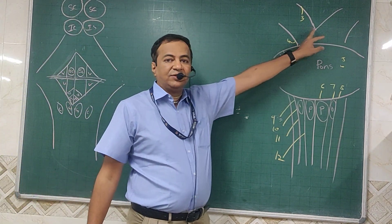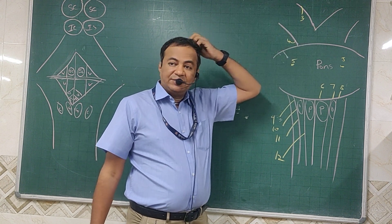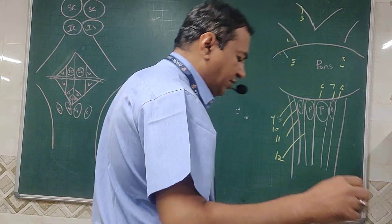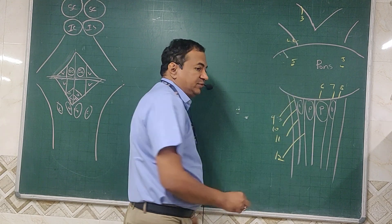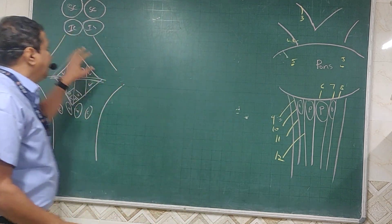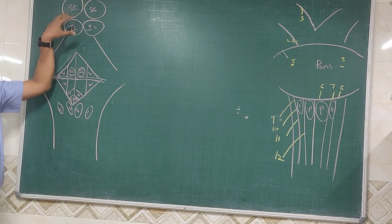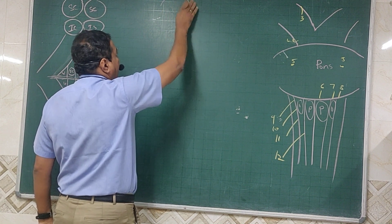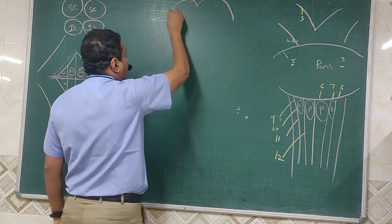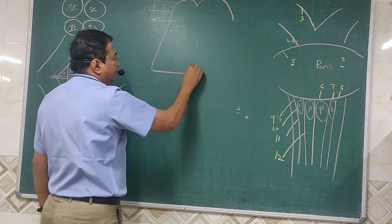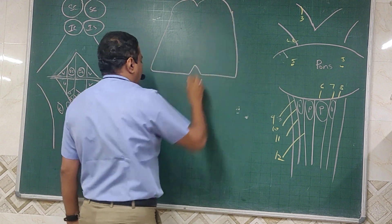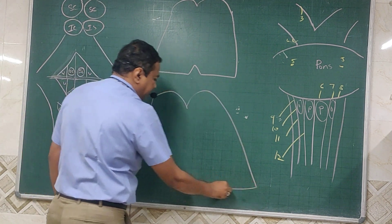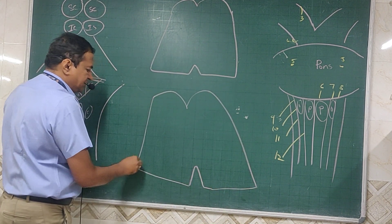For midbrain, anteriorly we see the two crus cerebri with the third nerve coming out on the anterior aspect. The fourth nerve emerges from the posterior aspect — it is the only cranial nerve which emerges from the posterior aspect and comes anteriorly. Posteriorly the midbrain shows the superior colliculus and inferior colliculus. When we take a section at the level of the superior colliculus, the midbrain sections are the easiest to draw.